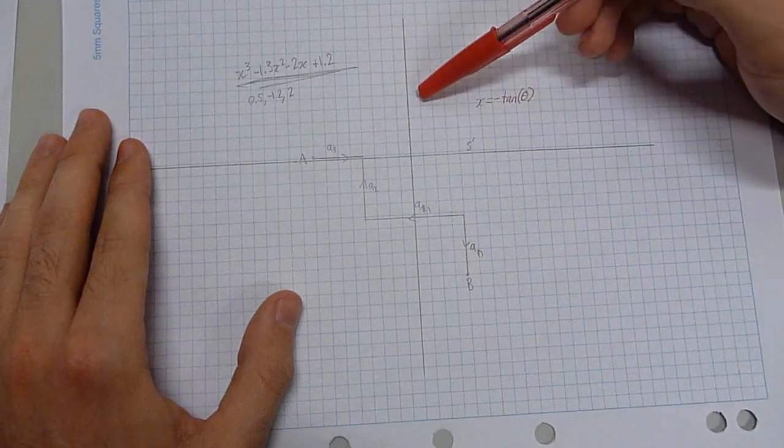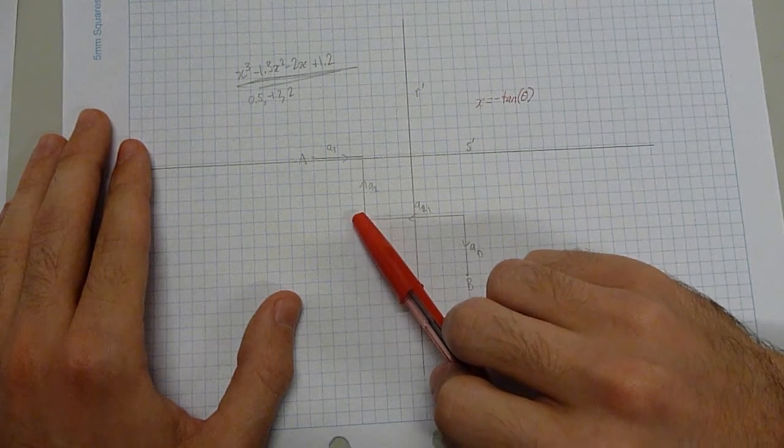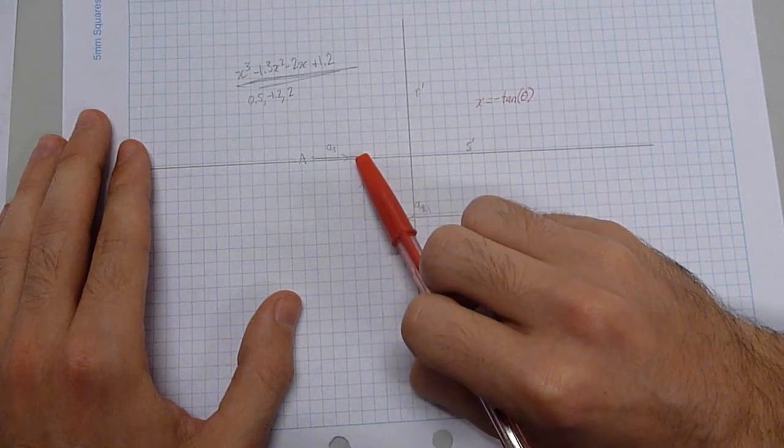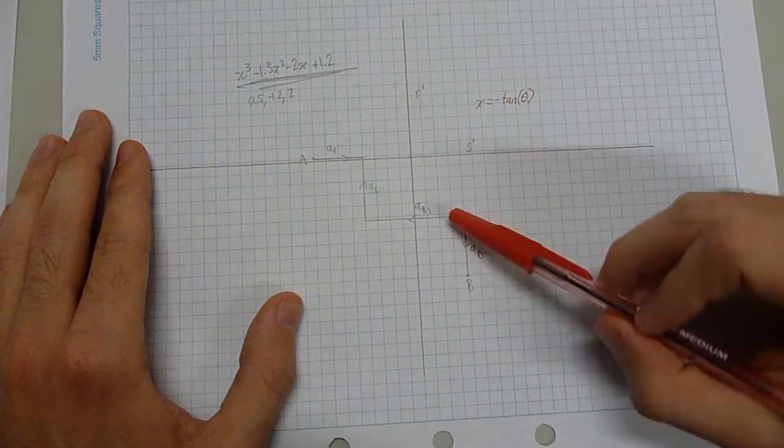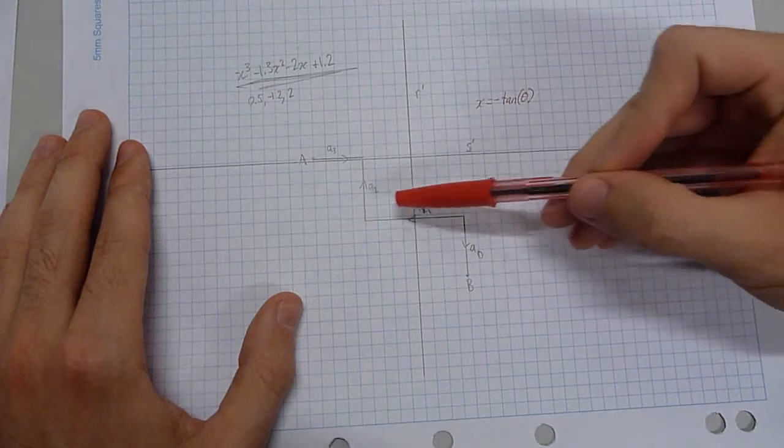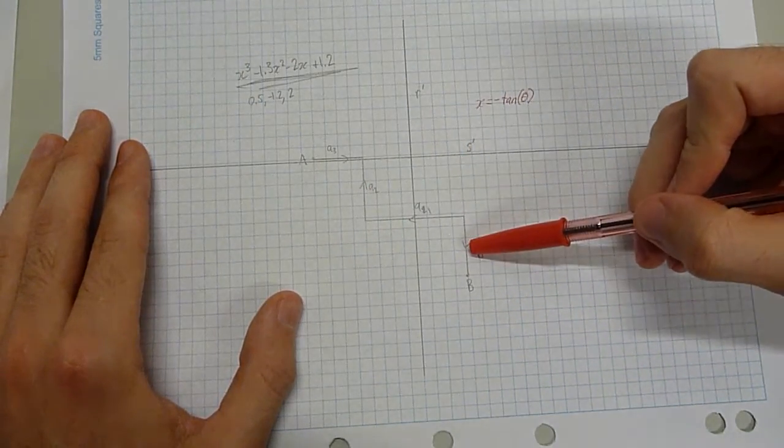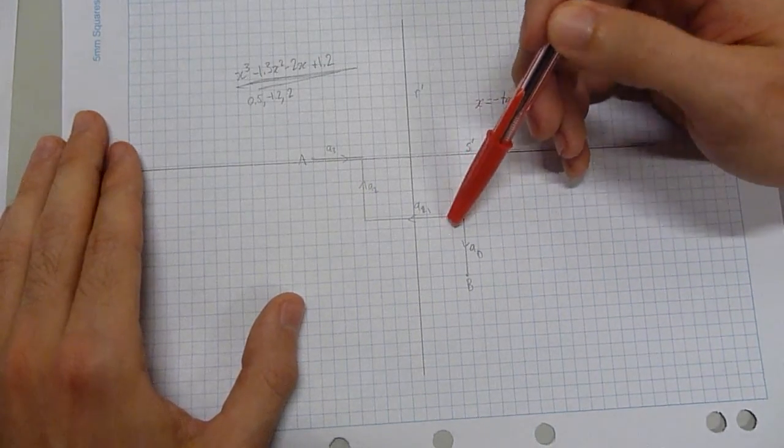So now, and then we've got these lines called R' and S', which are found by finding this line A2, and then you're going to get a distance equivalent to A3 the other side, and then draw a line, and it's going to be parallel to A2. And then similarly, this S' line, we're going to start at A1 and then travel a distance A0 in the other direction, and then we're going to just draw a line that is parallel to A1 there.